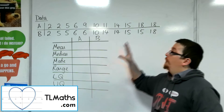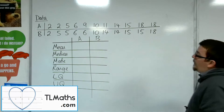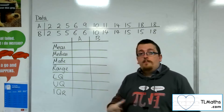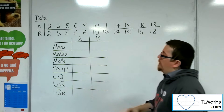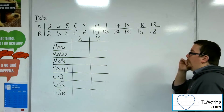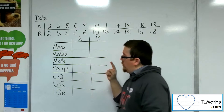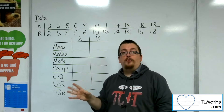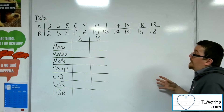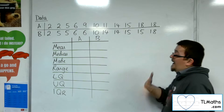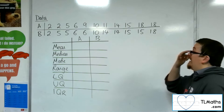So let's say I've got two sets of data and I'm going to try and compare them. I'm going to pull out all the stops — pull out the big guns. I'm going to try and find the mean, median, mode, range, lower quartile, upper quartile, and interquartile range for both sets of data in order to compare these two sets.